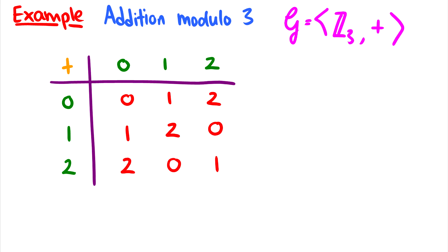Okay, so we have to check first, is it closed? And how do we do that? Well, we make sure that every element is in Z₃. And I'll tell you right now, Z₃ is just the set {0, 1, 2}.